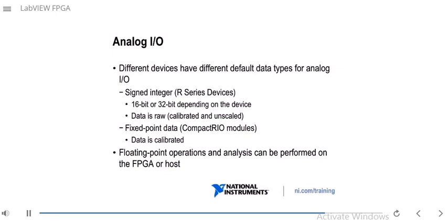For analog I/O, different devices have different default data types. For R-series devices, the default is a signed integer — 16-bit or 32-bit depending on the device. The data is calibrated but unscaled, so to convert to engineering units you need to scale that number into a voltage. For Compact-RIO modules with analog I/O, data is returned as fixed-point and is already calibrated. If you need floating-point operations or analysis, you can do this on the FPGA or on the host.